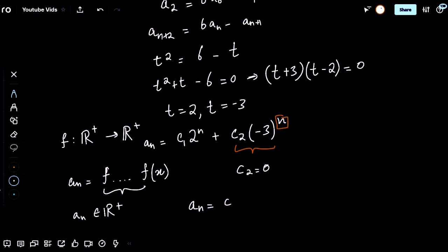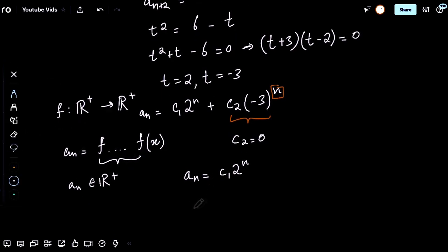That gives us A_n equals c_1 times 2^n. We know that A_0 equals x, and substituting that, we get A_0 equals c_1, which is equal to x. Therefore we have A_n equals 2^n x, which implies that A_1 equals 2x, which is f of x.